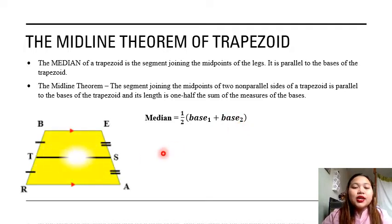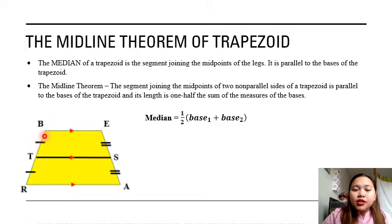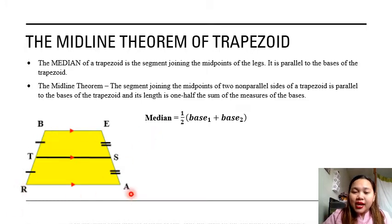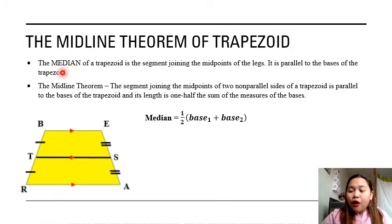To illustrate this, we have trapezoid BEAR. This trapezoid shows marks wherein some parts of it are congruent and parallel. To get the median, first get the midpoint of the legs. The legs are side BR and side EA. The bases are side BE and side RA. Getting the midpoints, you just need to divide the legs into two, and you need to name those points. We have point T and point S. Connecting point T and point S, we have line segment TS. That will be the median of our trapezoid.